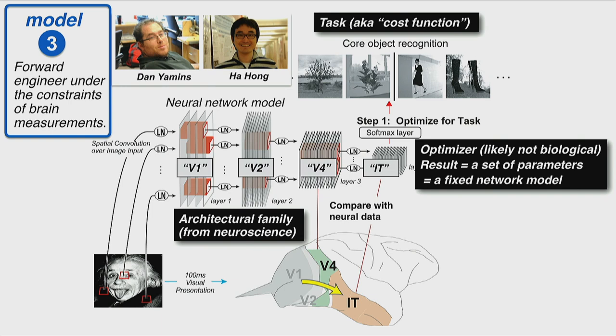You optimize the parameters, and there are many ways to do that. The most common in these networks is stochastic gradient descent — computing the error on the cost function and updating the parameters, mostly the weights, to get better at the task. This optimizer is highly debated as to how biological gradient descent is. In my framing, I'm not assuming this is biological at all. It's just a way to optimize a stacked set of perceptrons to do a particular task.